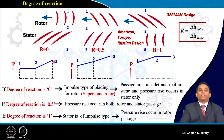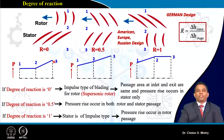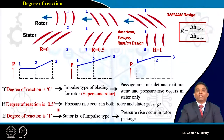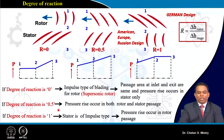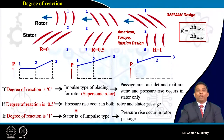When the degree of reaction is defined as 50 percent, the diffusion process is distributed between rotor and stator — 50 percent diffusion happens in the rotor and 50 percent in the stator. For 100 percent reaction, the whole diffusion happens only in the rotor.